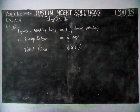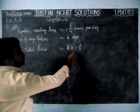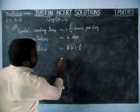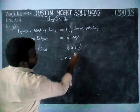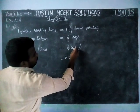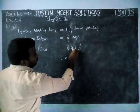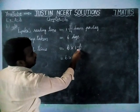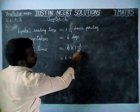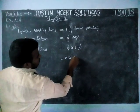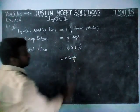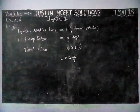First, we have to convert this mixed fraction into improper fraction. Then, 6 into — whole part into denominator plus numerator: 4 is 4, 4 plus 3 is equal to 7, divided by 4. And if it is possible to simplify, we can simplify.